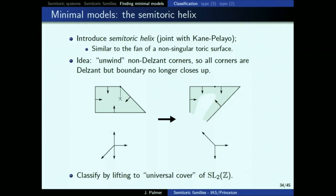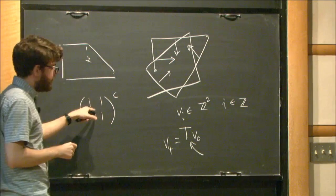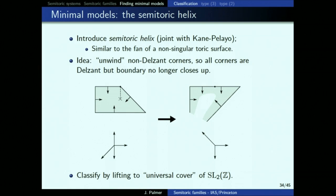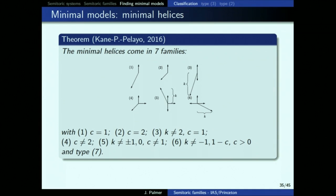You recover something you can work with using SL_2(Z). You have to work in SL_2(Z) and also keep track of looping around the origin — there are lots of details. But you can classify them, which gives seven different families of systems that do not admit blowdowns. Systems four through seven have a rightwards-pointing vector in their helix, meaning their polygon has a vertical wall and their S^1 action has a fixed sphere. There's also a surgery called a semi-toric blowdown implicit in Symington's work and made more explicit in a paper by Hohloch, Sabatini, Seppi, and Symington. So four through seven aren't really minimal — one, two, and three are the ones we're most interested in.